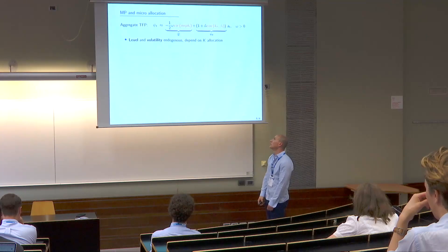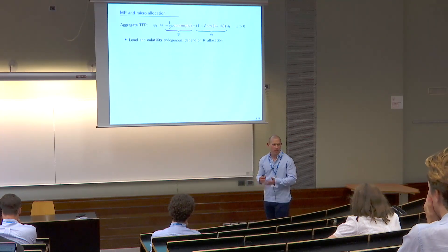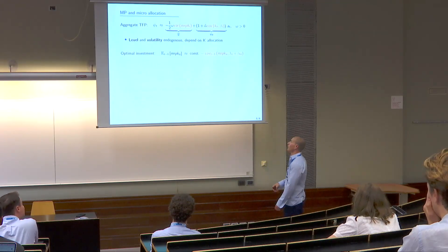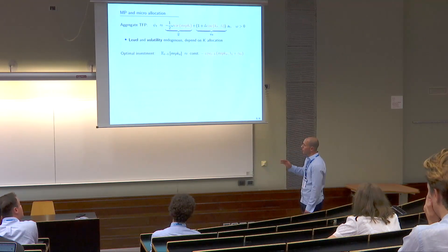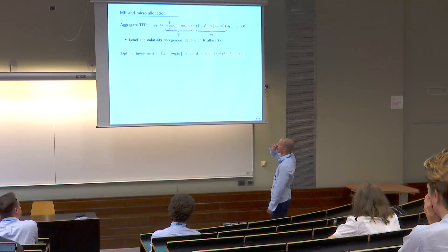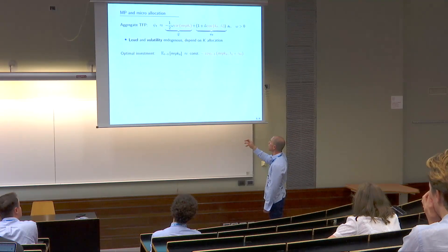To understand aggregate TFP I need to understand the determinants of the microallocation. Taking a second-order approximation to the firm's optimality condition gives the expression from the introduction: the firm equates the expected marginal product of capital to a constant plus a risk premium, which depends on the negative of the covariance of the marginal product with the distorted discount factor.